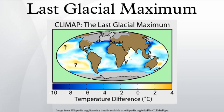The last glacial maximum was the last period in the Earth's climate history during the last glacial period when ice sheets were at their greatest extension. Growth of the ice sheets reached their maximum positions 26,500 years ago. De-glaciation commenced in the Northern Hemisphere approximately 19,000 years ago, and in Antarctica approximately 14,500 years ago, which is consistent with evidence that this was the primary source for an abrupt rise in sea level 14,500 years ago.